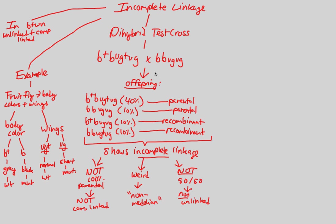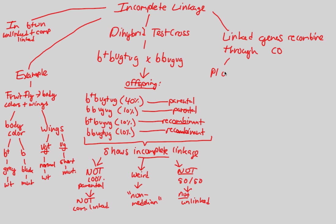The last thing I'll state is that linked genes recombine through crossing over. We do see recombination because we have two recombinants — we see some change from our parentals. Linked genes recombine through crossing over, and this is going to happen during prophase one of meiosis. Do not ever forget that crossing over happens during prophase 1 of meiosis. And this is why the linkage is not complete nor unlinked — it's incomplete.